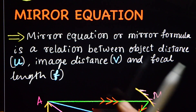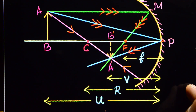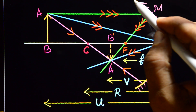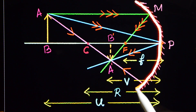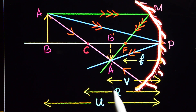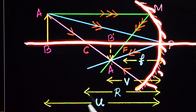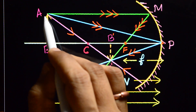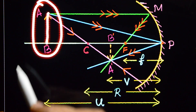In your answer, first you have to write this line. After that, you need to draw the diagram. First, you have to draw the concave mirror. That is the principal axis. Next, AB is the object — you need to draw the object AB.